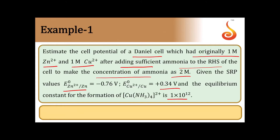They are adding ammonia to the RHS, which means to the copper-ion-containing electrode. Because of this, the copper ion forms a complex with ammonia, and due to this the concentration of copper ions gets reduced. The new concentration of copper ions has to be calculated using the equilibrium constant given to us. There are 3 steps altogether in this problem.